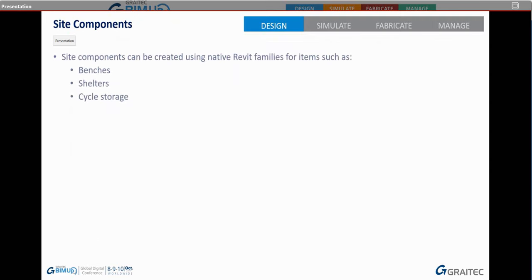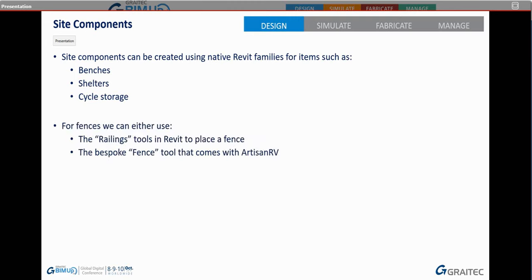Site components can be created using native Revit families for items such as benches, shelters, and site storage. For fences, we traditionally use railings, which got much better in 2018 because you can now host them onto a topo surface. There's also a bespoke fence tool inside Artisan. We can create planters easily using the wall tool and floor tool for filling in what goes inside the planter, then group them so that if we edit one, the others all update too.